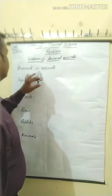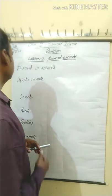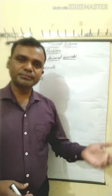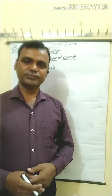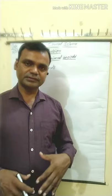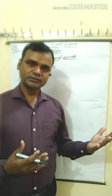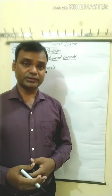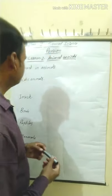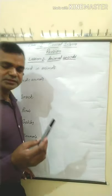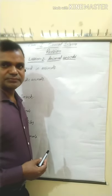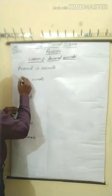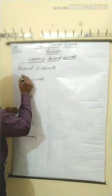Next topic is movement in animals. Animals move from one place to another place for searching food, for shelter, and for breeding. Different animals use different types of moving organs. The next topic is organs of movement.